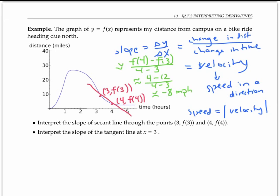But what does this negative eight miles per hour refer to? Since we're looking at the change in distance over this entire hour-long interval, the slope of my secant line gives my average velocity over this interval.